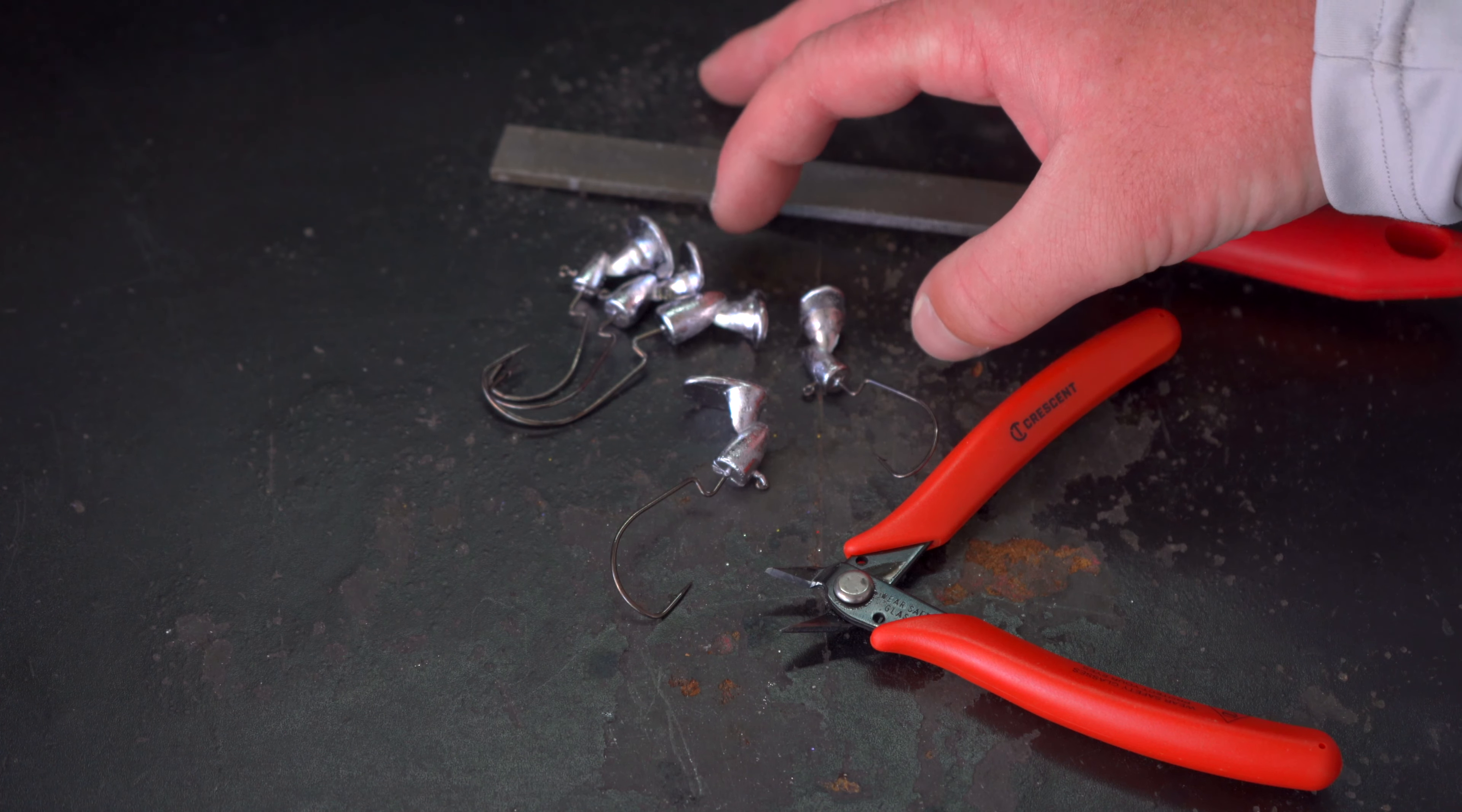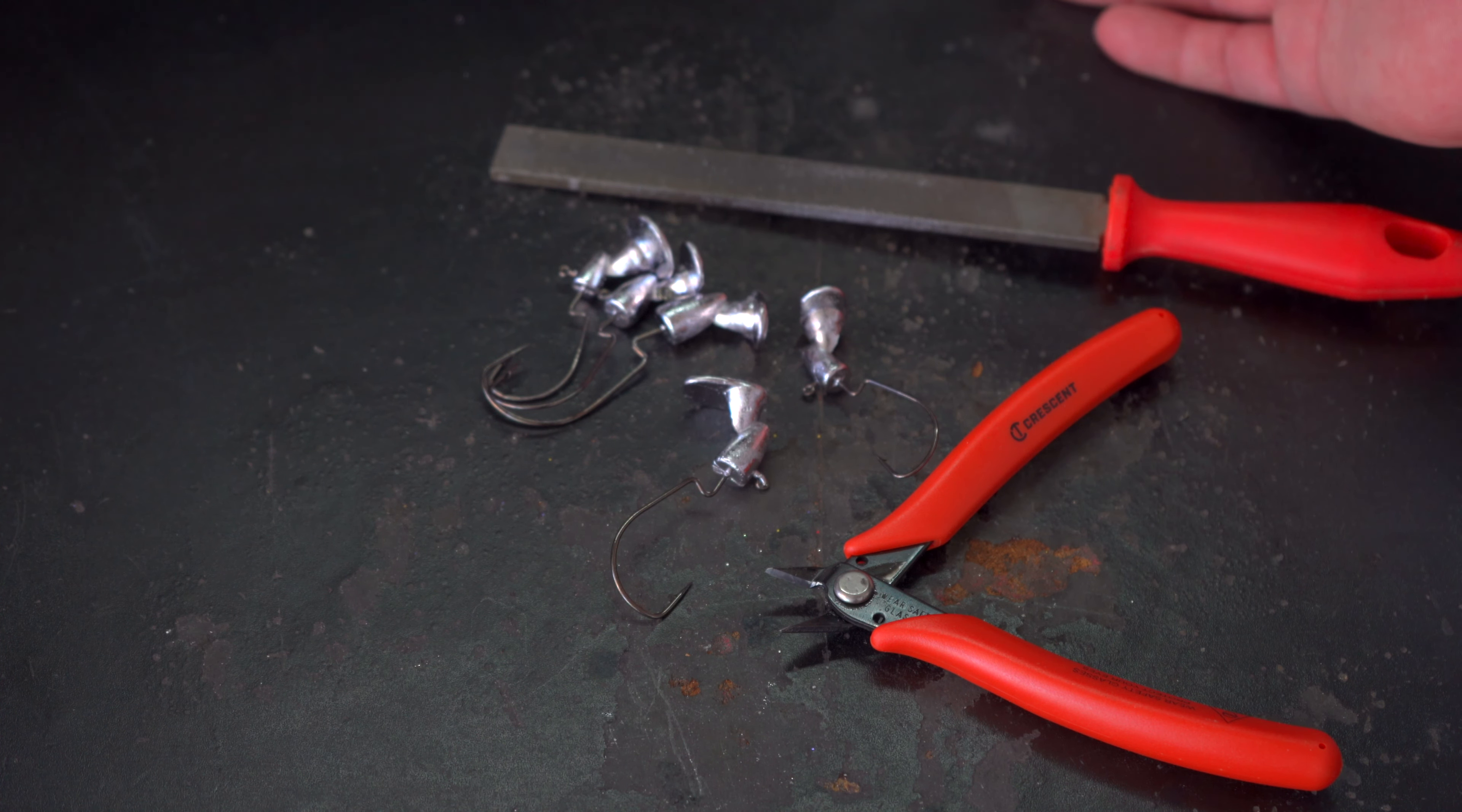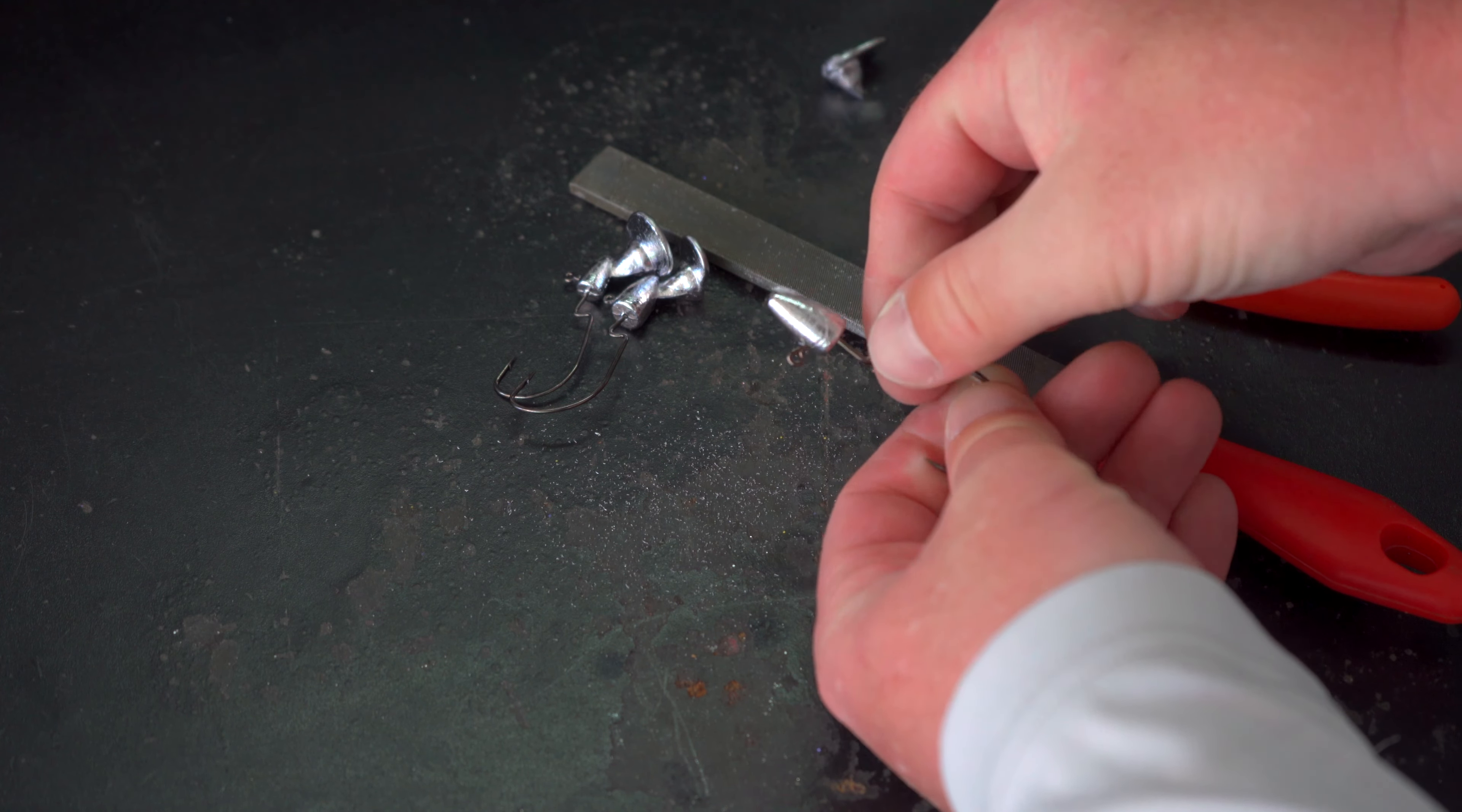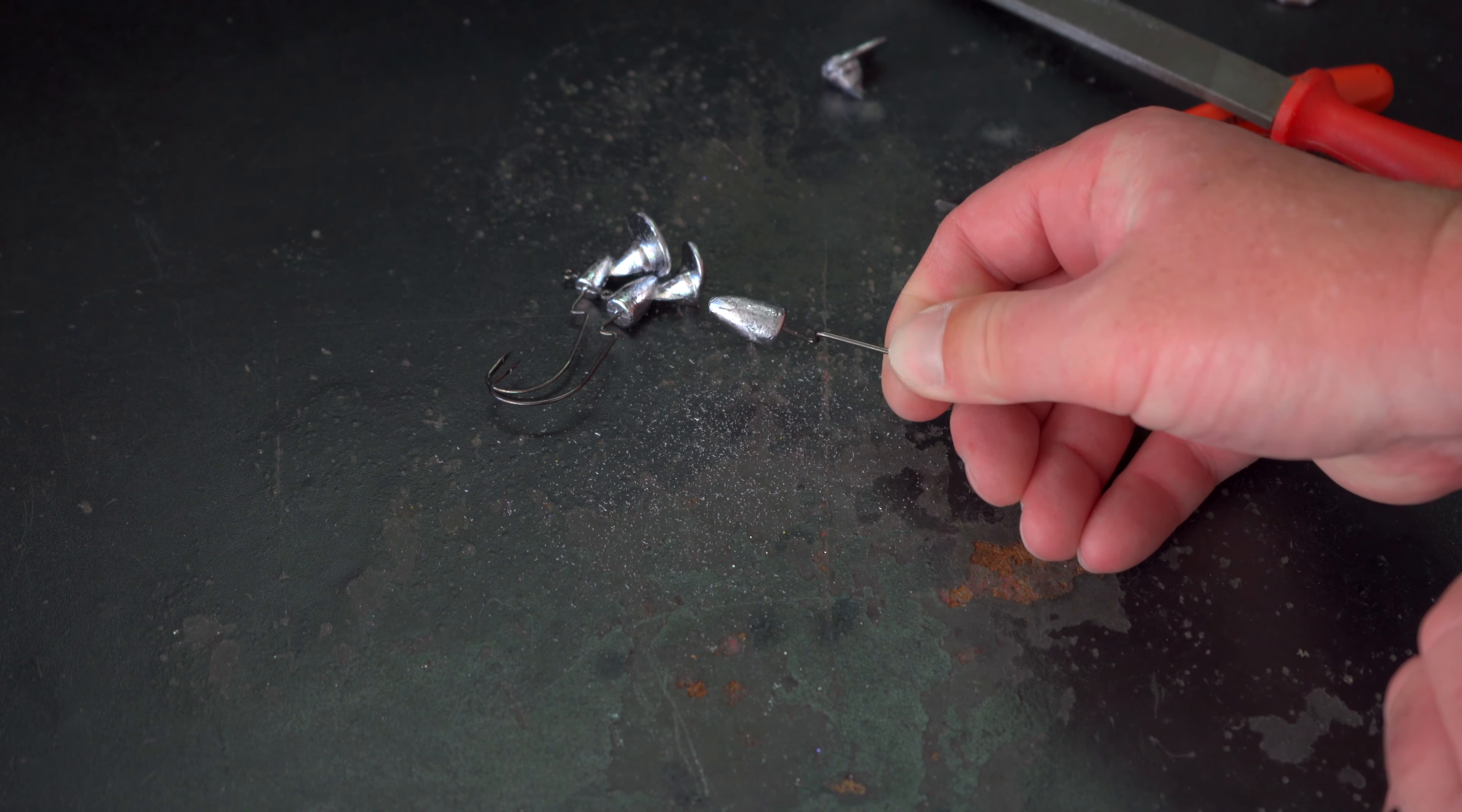Now this part's important. You want to let these cool down before you start trimming any of these sprues. These things are hot when they come out of the mold, so just be careful to not start doing this too soon or you might burn your fingers because that lead is still going to be very hot. So we're just going to take our shears. We're going to cut the sprue right there. It's going to leave a little bit left over and then you just take a file. You're going to file everything down. Once it's nice and smooth, it's ready to paint.